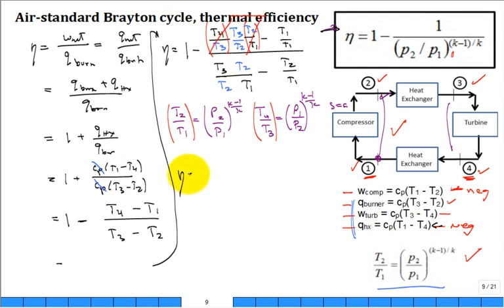So now our thermal efficiency is equal to 1 minus T3 divided by T2 minus 1. That's still in the numerator. The denominator, I'm looking at it and I'm saying, you know what, I have this T2 over T1 in both terms. I'm going to pull those out.